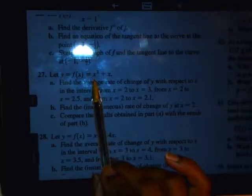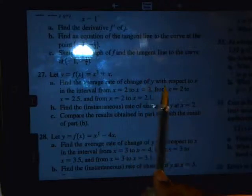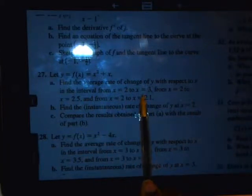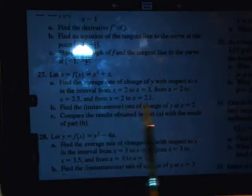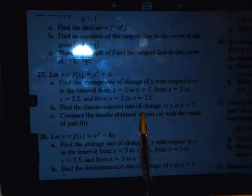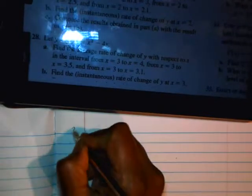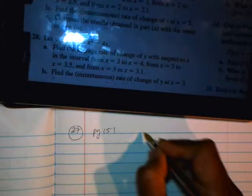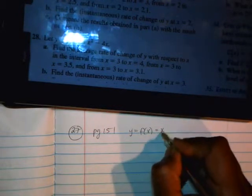If you're given this function, x squared plus x, you need to find the average rate of change of y with respect to x in the interval from x equals 2 to x equals 3, from x is 2 to 2.5, 2 to 2.1, and find the instantaneous rate of change, and then compare the results. So 27, page 151, f(x), which is y, is x squared plus x.